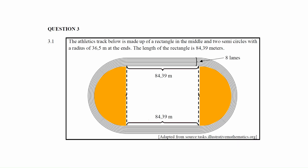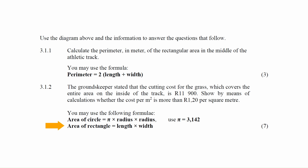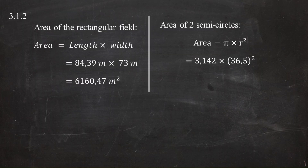Next, we calculate the area of the circular section — the two semicircular sections combined — using the formula: area = π × r². Substituting π = 3.142 and r = 36.5 meters gives an area of 4,185.9295 square meters.